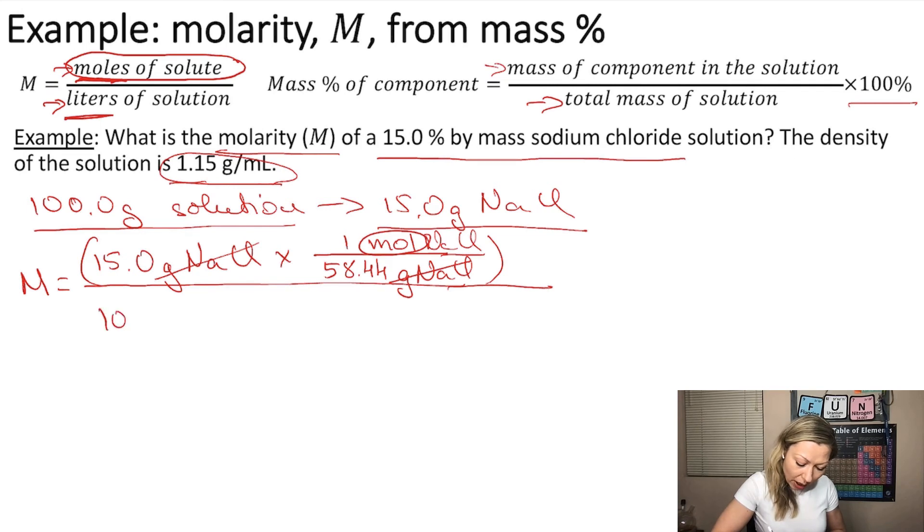And on the bottom, I'm going to use 100 grams of solution, and I want to convert the grams into milliliters first. So, I know that the density is 1.15 grams in 1 milliliter, so the grams are going to go on the bottom, which is 1.15, and 1 milliliter is going to go on top,